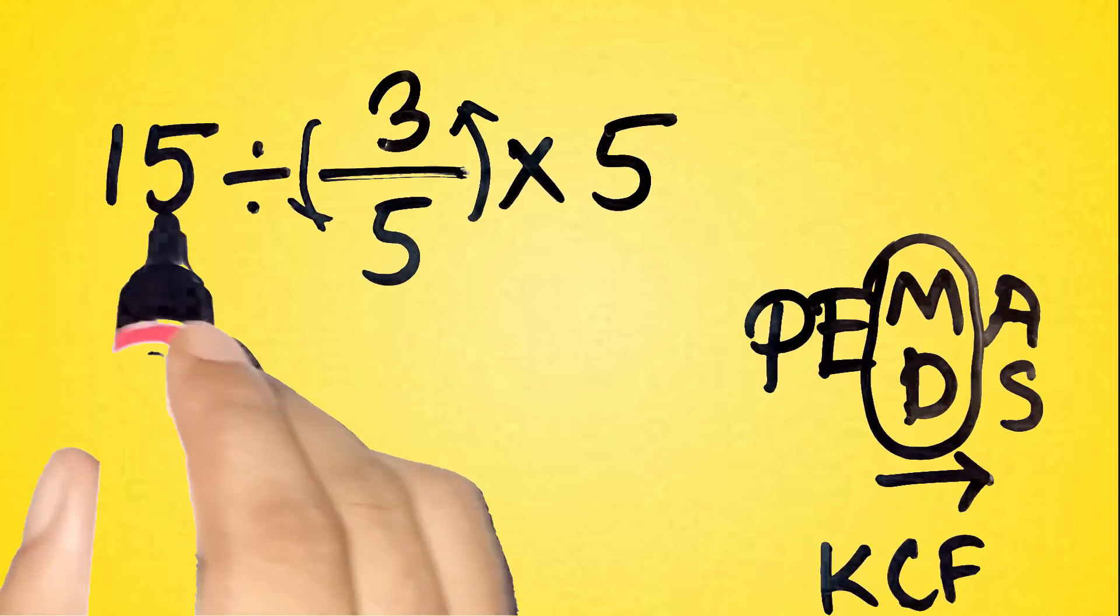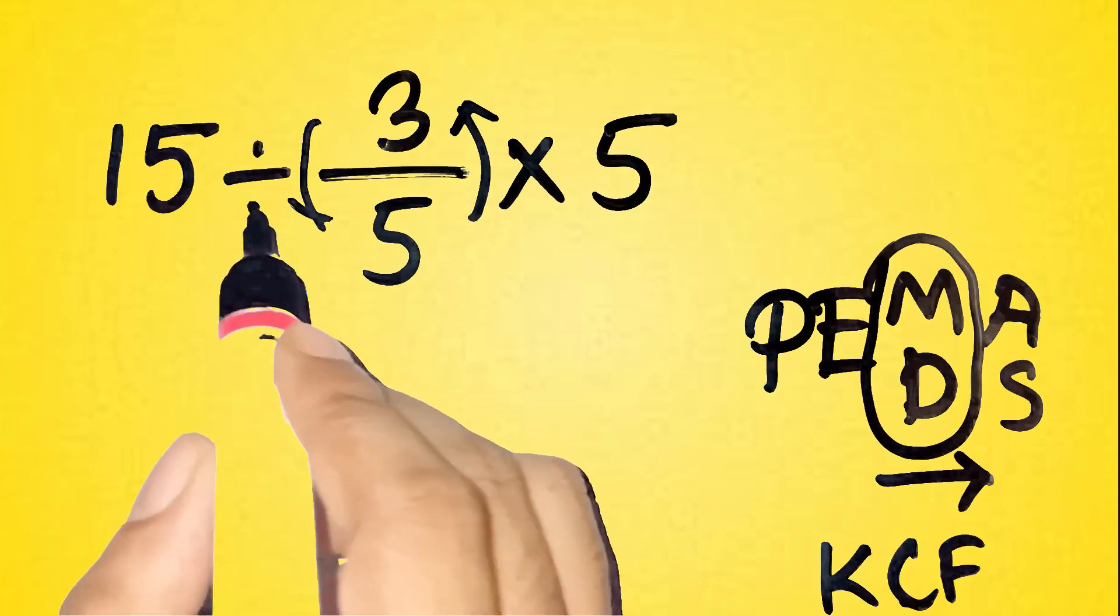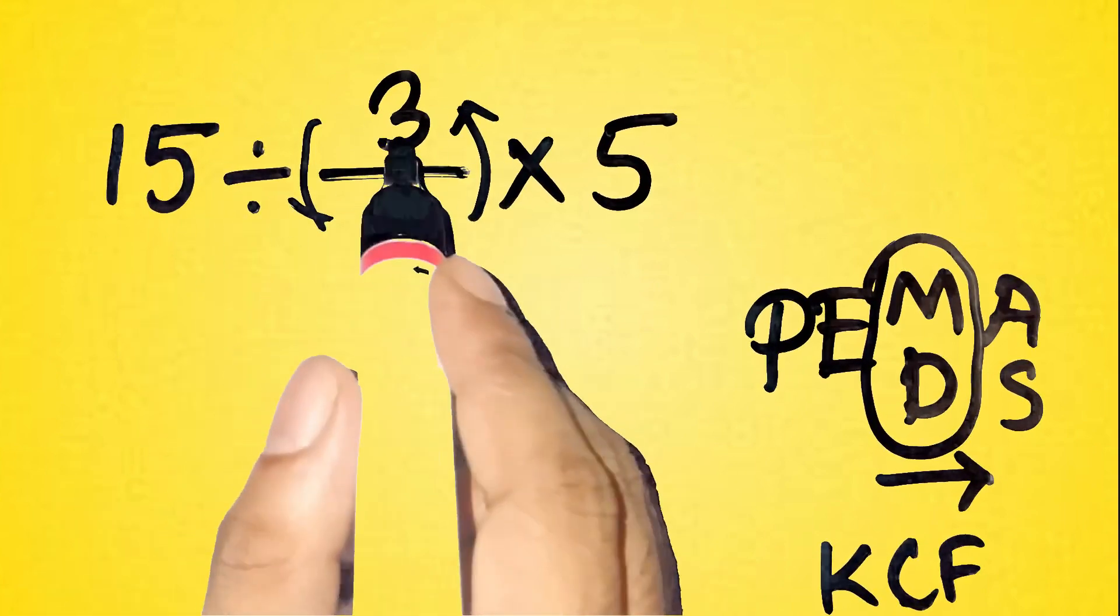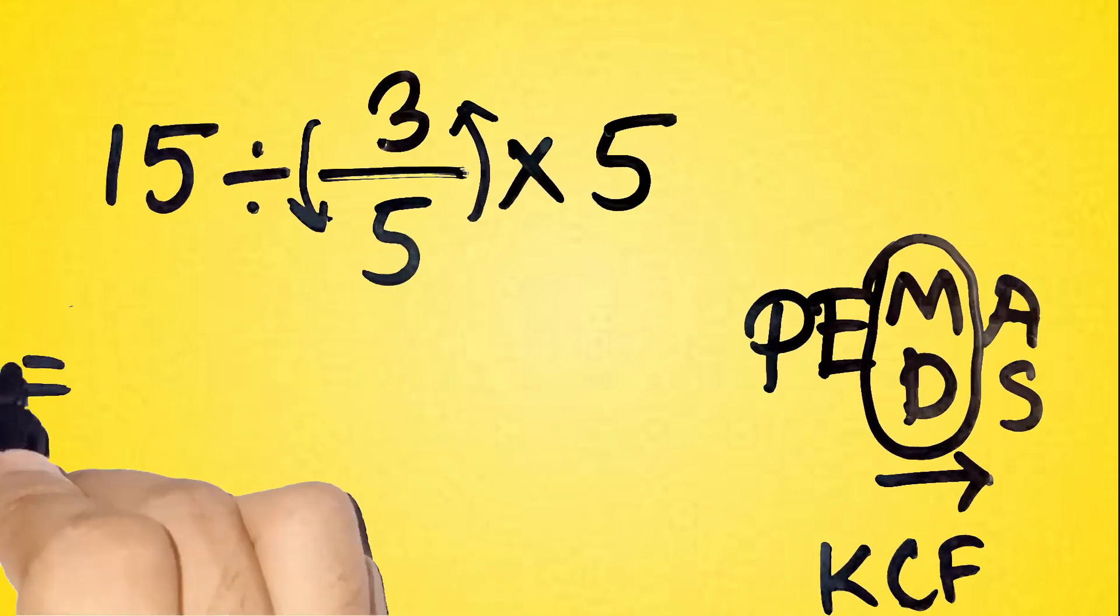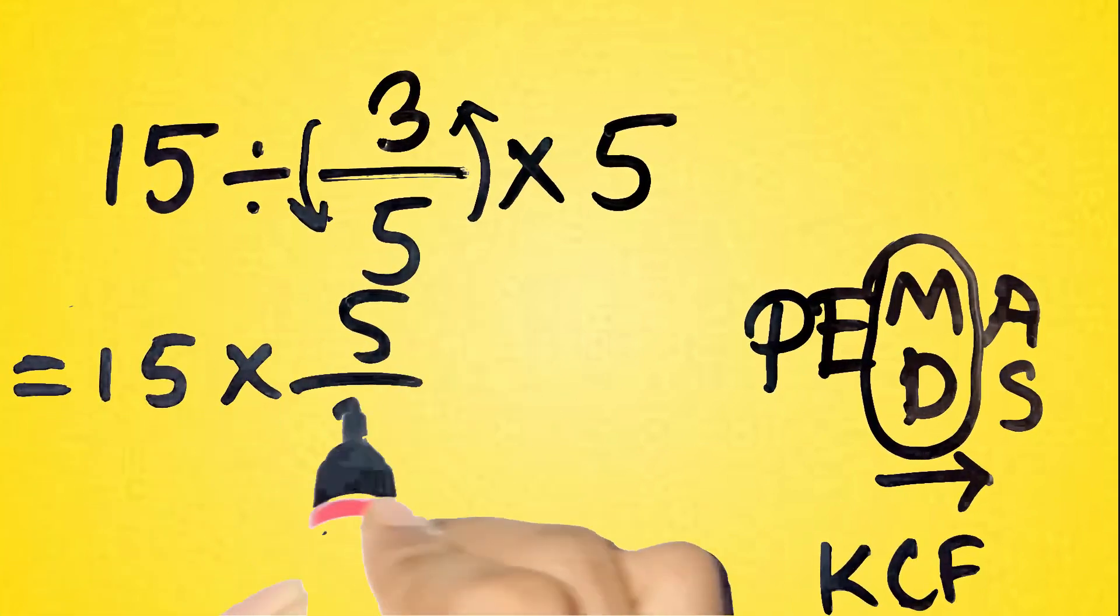Keep the first number, change the division to multiplication, and flip the fraction. So 15 divided by 3 over 5 becomes 15 times 5 over 3.